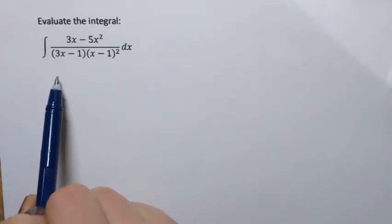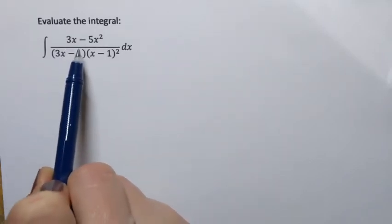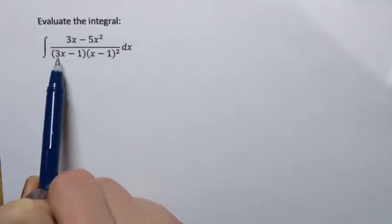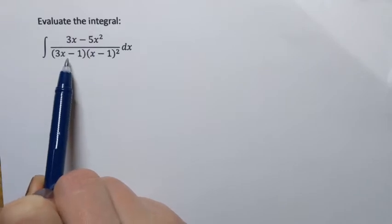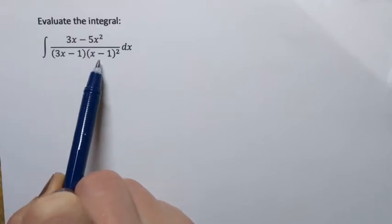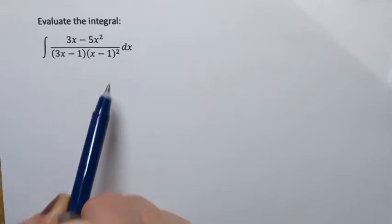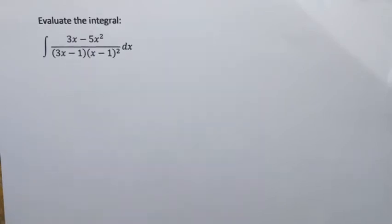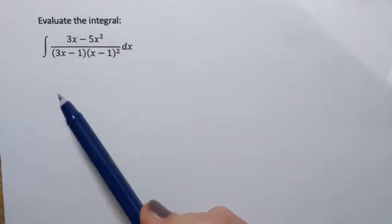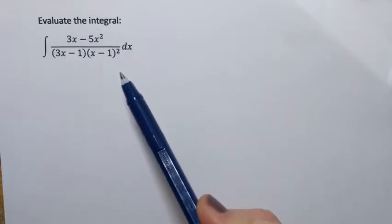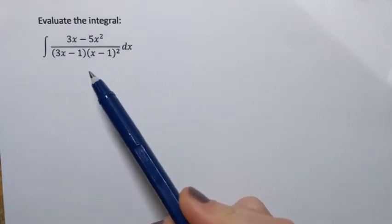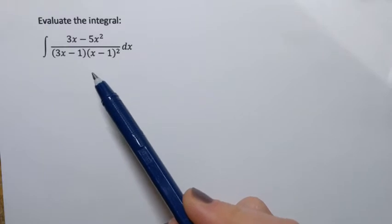We're going to evaluate the integral of (3x minus 5x squared) over (3x minus 1)(x minus 1) squared dx. As we can see, this is a rational function, so to evaluate this integral we're going to use partial fractions.